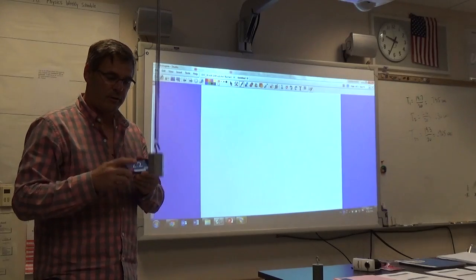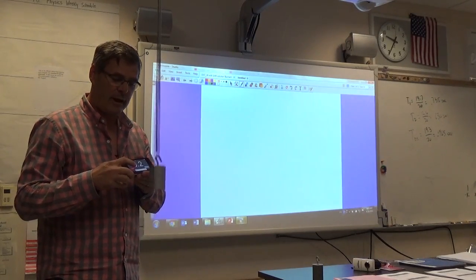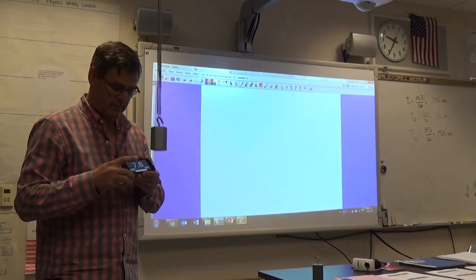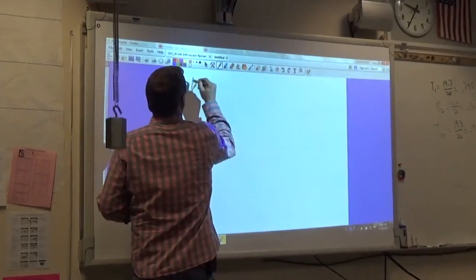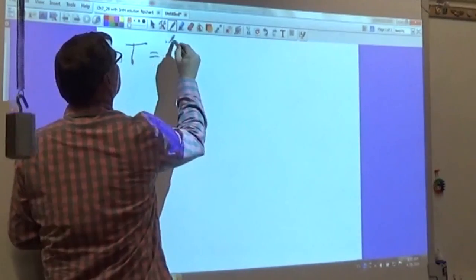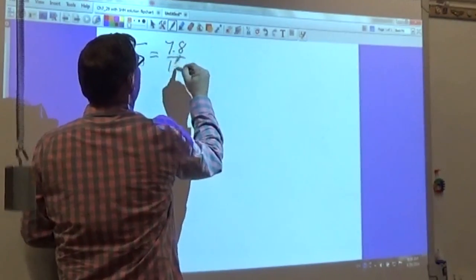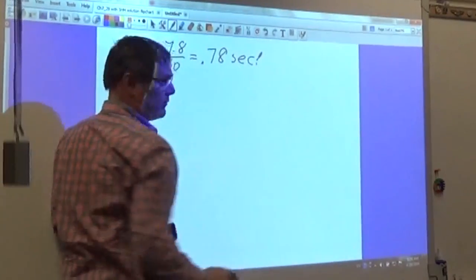One, two, three, four, five, six, seven, eight, nine, ten. Seven point eight seconds. Okay? So the period would be seven point eight divided by ten. So that's point seven eight seconds.